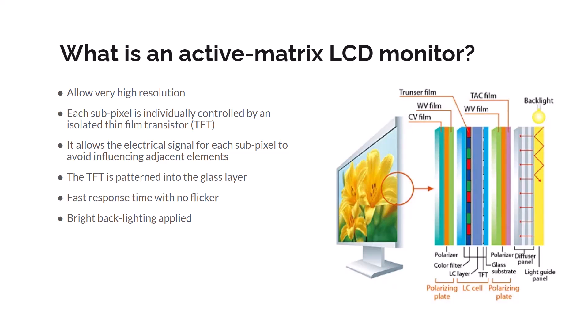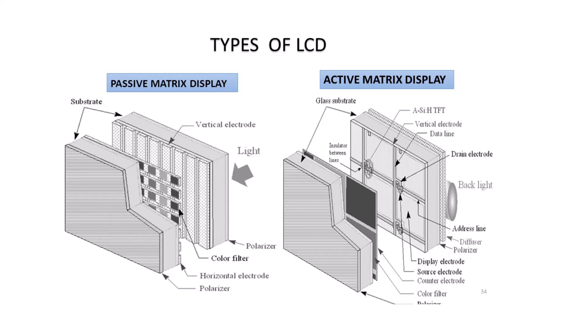The active matrix is needed for high-resolution images. What sets it apart is that each pixel has a TFT, or thin film transistor, that prevents the electrical signal for each subpixel from influencing adjacent elements. This is important because when each pixel is representing a portion of an anatomical feature or potentially pathology, we need accuracy in the detail being displayed. The TFT allows for much higher contrast using the active matrix design compared to a passive matrix. There's also no flicker with this type of monitor. The active matrix monitor has more components but provides greater contrast in the displayed image.